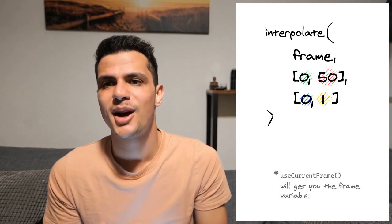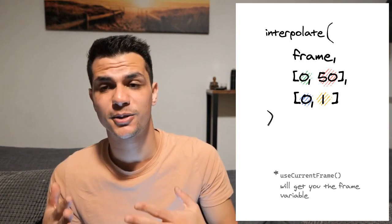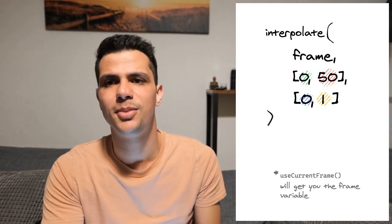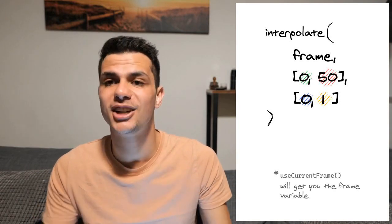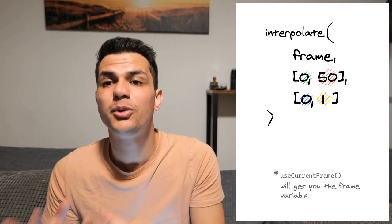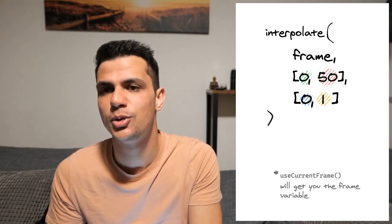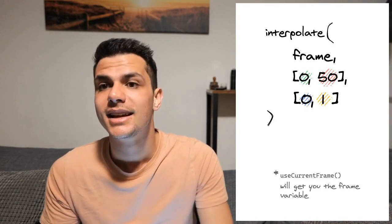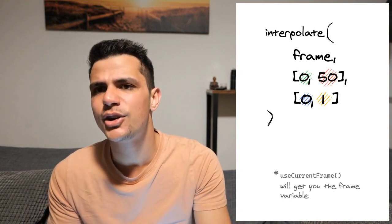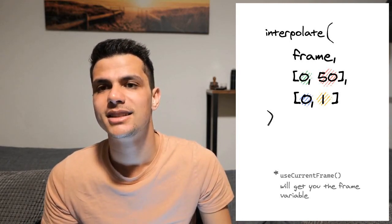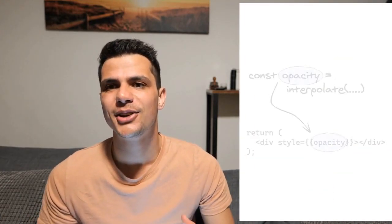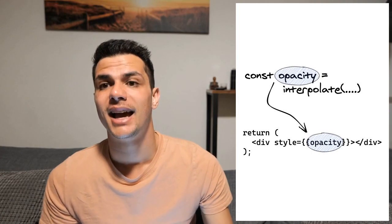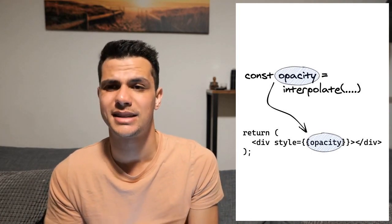The second argument allows us to pass in the lower and upper bound of our input range. In this example we pass in 0 and 50, because in terms of time that's the start and end marker of our animation. The third parameter is the output range — we pass in 0 and 1 as a tuple. The return value is the opacity, which we can apply using the style prop.